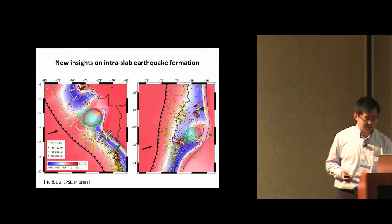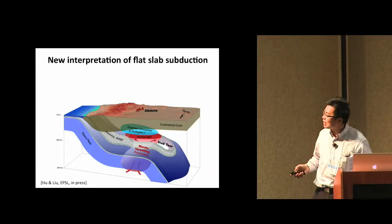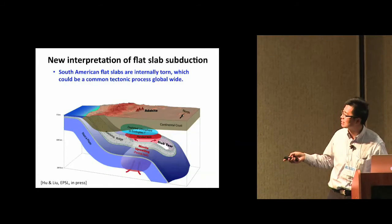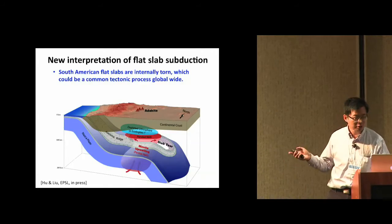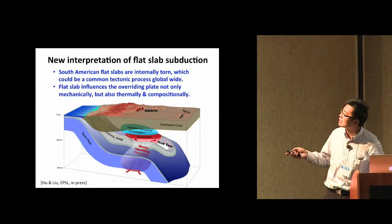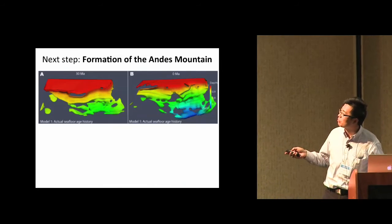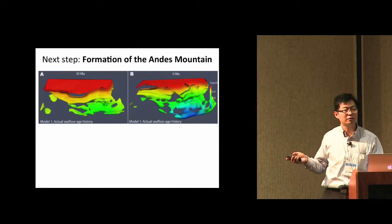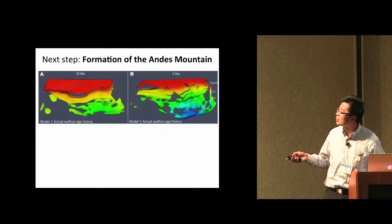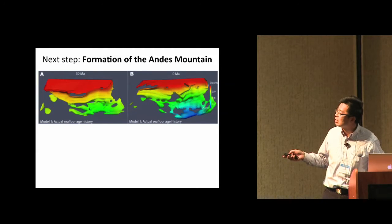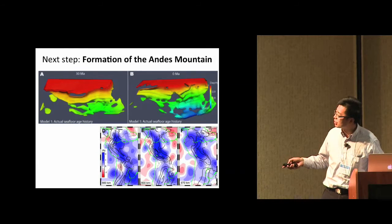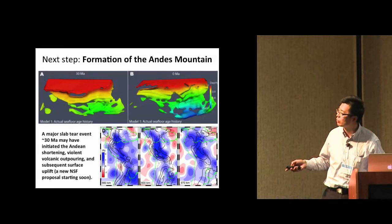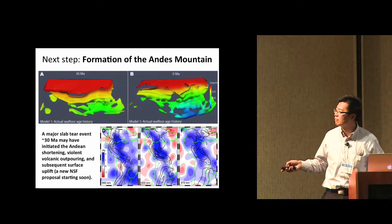In summary for the flat slab: the geometry is broken rather than continuous, as we predicted. Our next step is to look at the formation of the Andes Mountains, which is a very interesting implication because our model predicts a major slab gap in central Chile — a prediction confirmed by tomography. We have a new NSF proposal started on this.